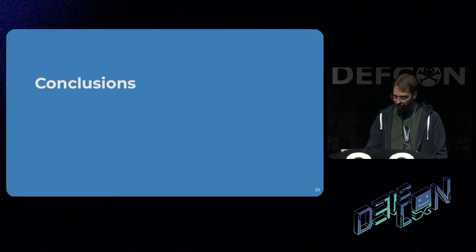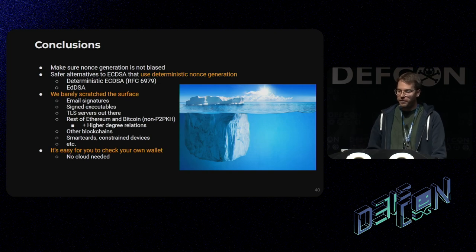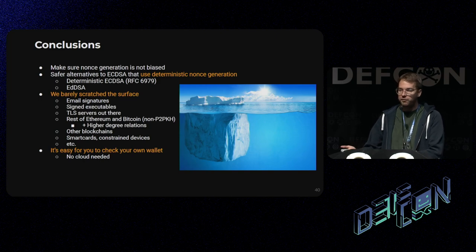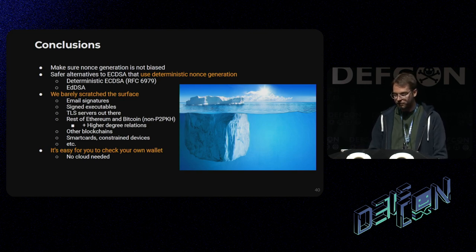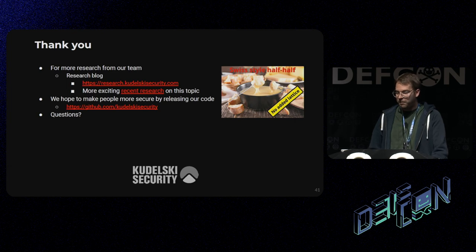A few takeaways: make sure you don't generate signatures with a biased nonce. To ensure you don't do that, you should use something that does deterministic nonce generation, such as deterministic ECDSA or EdDSA. We just barely scratched the surface here — there are plenty of other areas that you could apply this attack on. And it's very easy for you to check your own wallet. You don't need the whole chain; if you just have the signatures for your wallet, the public key and the message, you can run this on your laptop. For more research from our team, please visit our blog. We hope that people get more secure by releasing our code — it's public and on GitHub. Thank you.